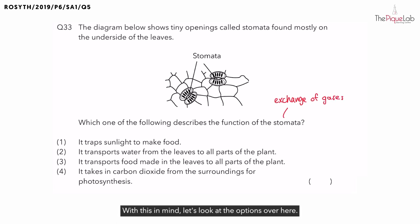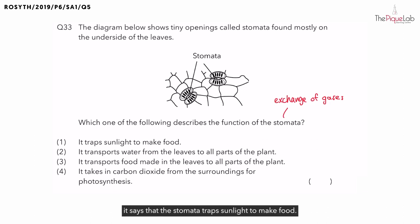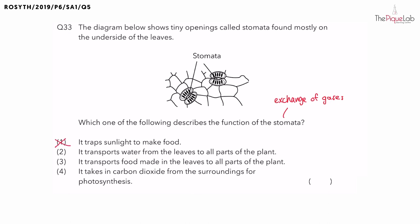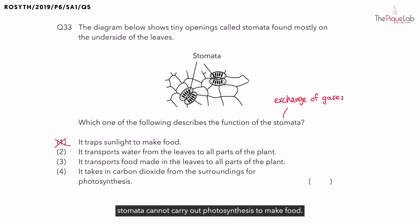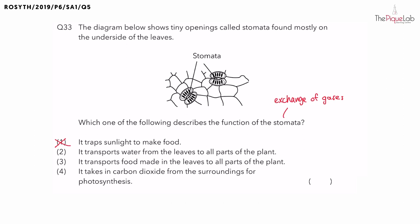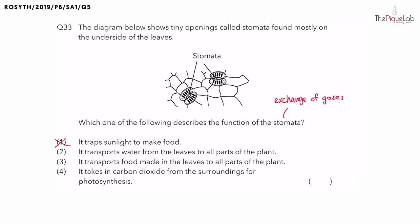With this in mind, let's look at the options. First option: the stomata traps sunlight to make food. Do the stomata trap sunlight to make food? No. This is because stomata are tiny openings on the leaves and they are not cells. Stomata do not contain chloroplasts and are hence unable to trap sunlight. Therefore, stomata cannot carry out photosynthesis to make food. Instead, it is the chloroplasts found inside the leaves that trap sunlight for the plant to make food.